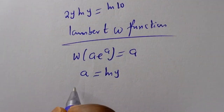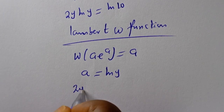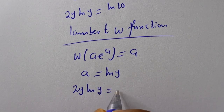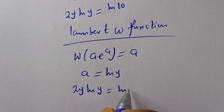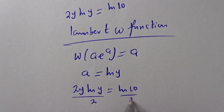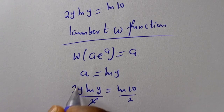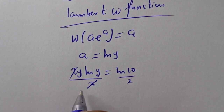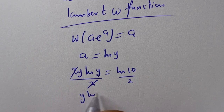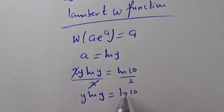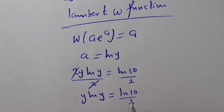We have the equation 2y ln of y is equal to ln of 10. Let's divide both sides by 2. Now we have y ln of y is equal to ln of 10 over 2.